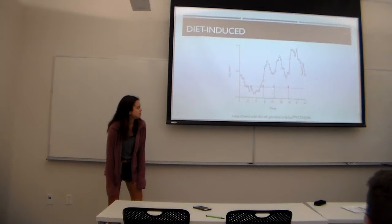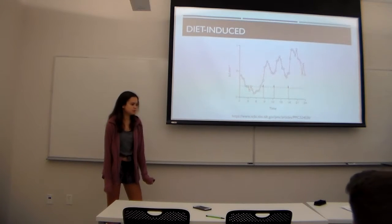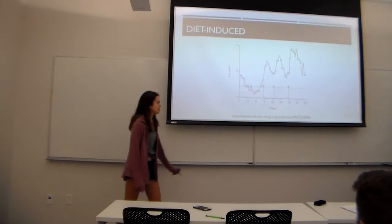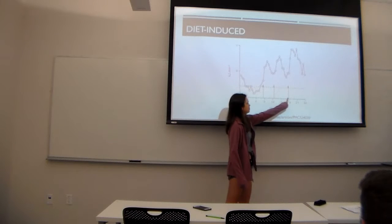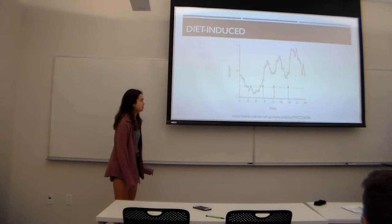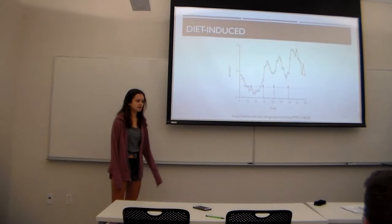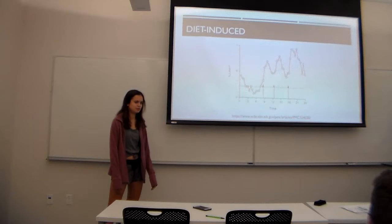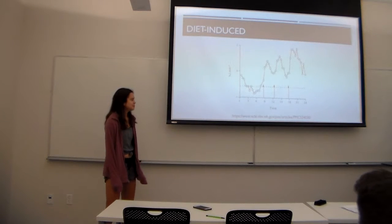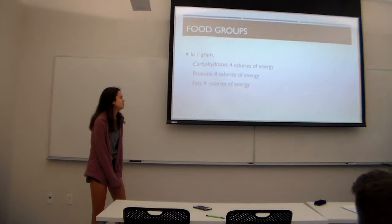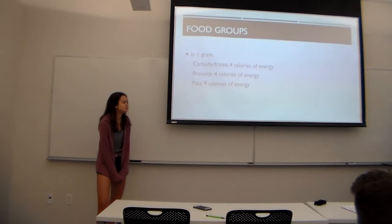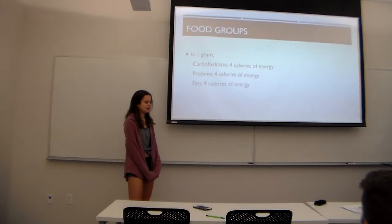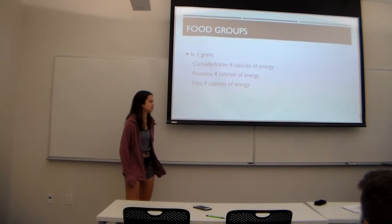For diet-induced thermogenesis, a study used respiration to calculate how much energy the body was using. At each arrow on the chart, participants were allowed to eat a meal, and as you can see, the energy their body used spikes because thermogenesis needs to increase to process and digest that food. Carbs and proteins store four calories of energy per gram, while fat stores significantly more energy, which is why it takes more to burn.